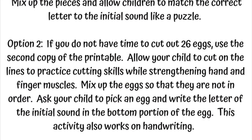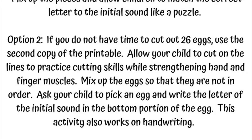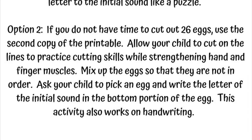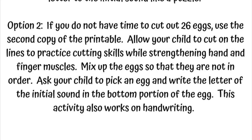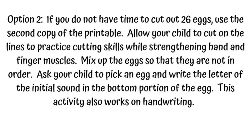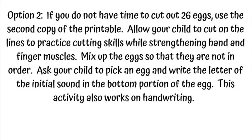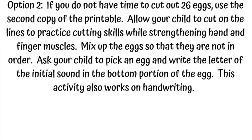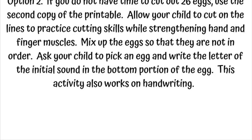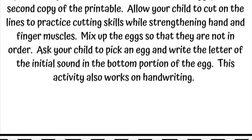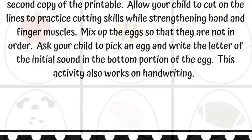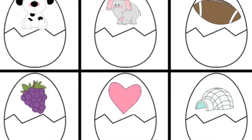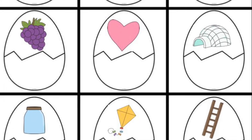Option two: if you do not have time to cut out 26 eggs, use the second copy of the printable. Allow your child to cut on the lines to practice cutting skills while strengthening hand and finger muscles. Mix up the eggs so that they are not in order. Ask your child to pick an egg and write the letter of the initial sound in the bottom portion of the egg. This also works on handwriting skills. Your child will decide the initial sound for each picture and write it in the bottom portion of the egg.